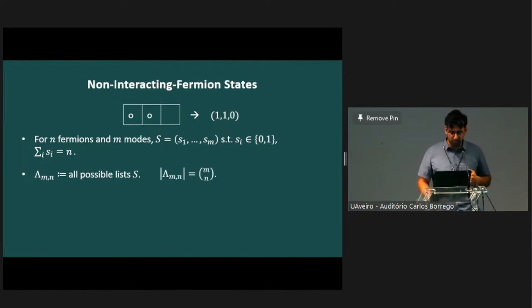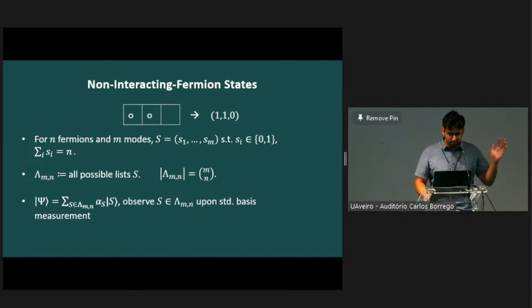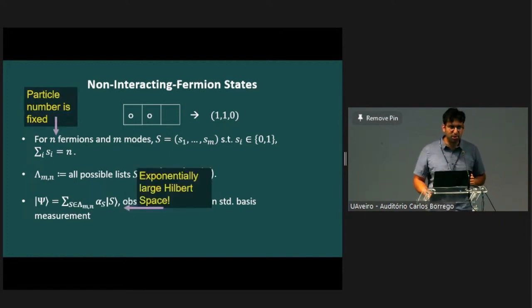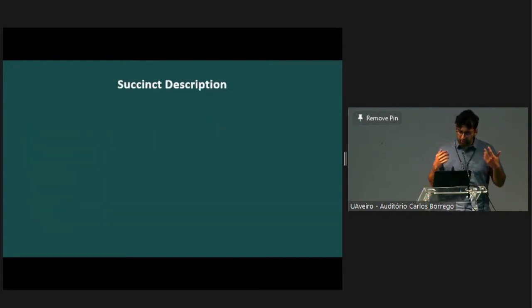The set of all possible lists of length m with hamming weight n captures all of the configurations your system can be in. We denote this by lambda mn. It's a quick counting thing you can do in your head that there are m choose n such configurations. The way we write down a non-interacting fermion state is it's a superposition over possible configurations of your system. When you measure your state, you'll observe some configuration with a probability that goes like the amplitude squared. In this work, the number of particles is fixed to n. But even still, our quantum state lives in an exponentially large Hilbert space. Our goal is time efficient tomography. So even writing down this list of amplitudes will take exponential time.